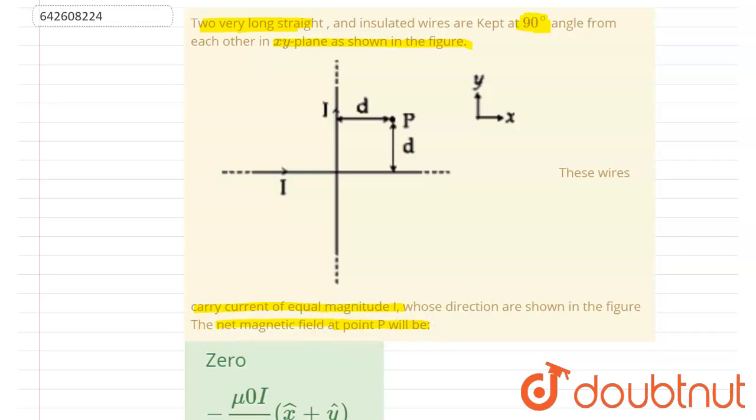You can imagine that the magnetic field at point P because of both the current carrying wires will be either into the plane or out of the plane.